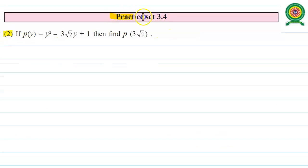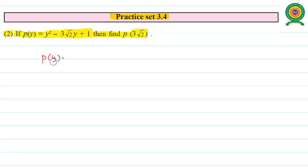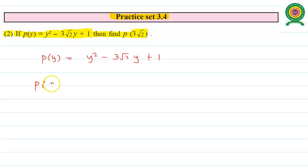Now look at the second sub-question from Practice Set 3.4. If P(y) equals y² minus 3√2·y plus 1, then find the value of P(3√2). We are given P(y) equals y² minus 3√2·y plus 1 and we need to find the value for P(3√2).